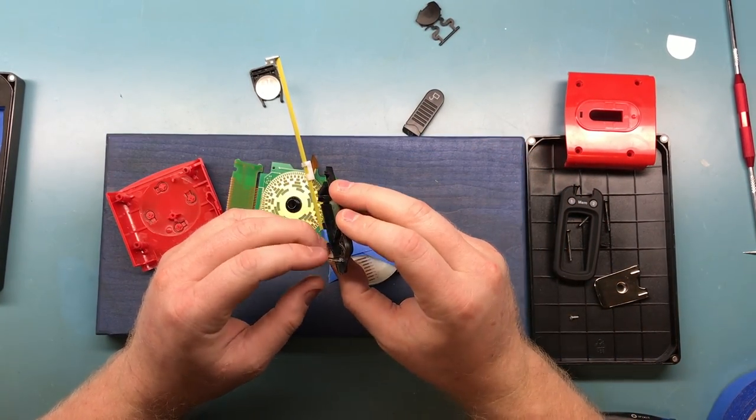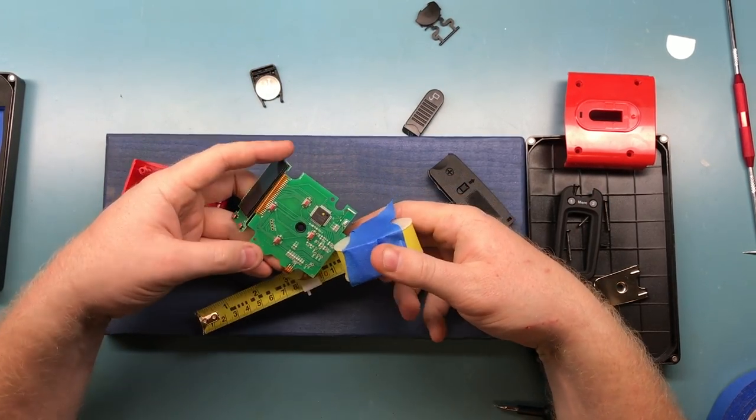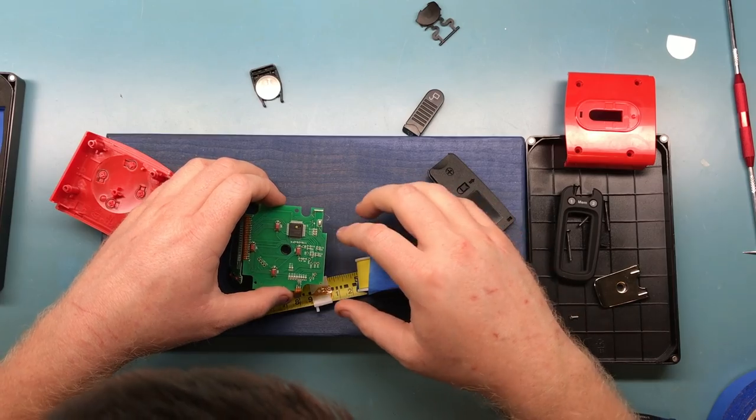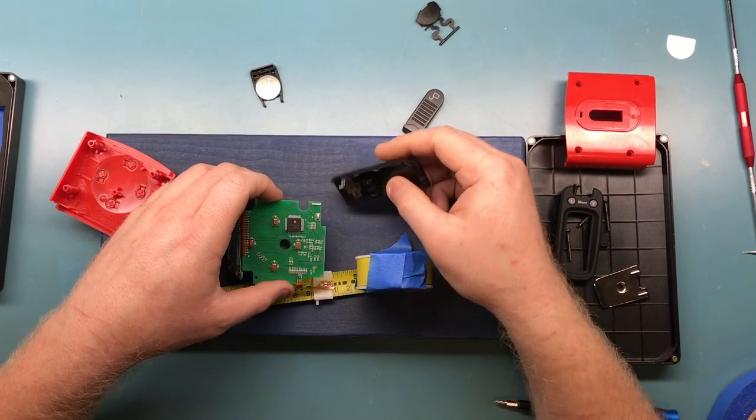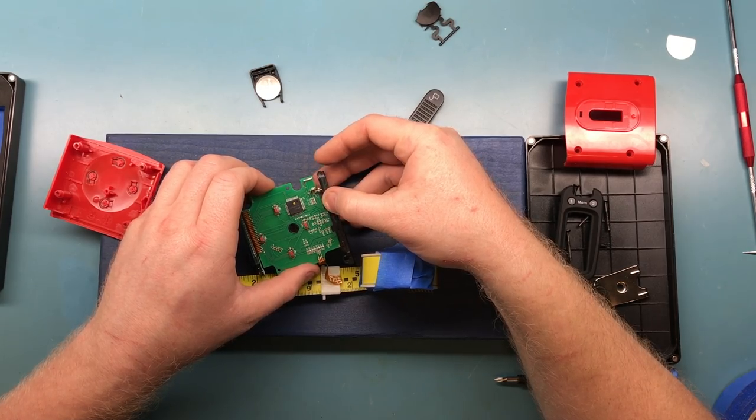Okay, so this little spring tab here goes under the board and there's like an extra dab of solder here that it kind of rests on for the battery.